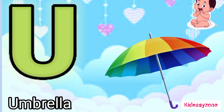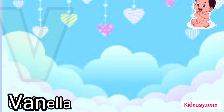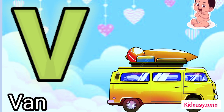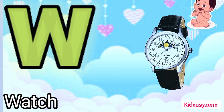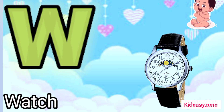U is for umbrella. V is for van. W is for watch.